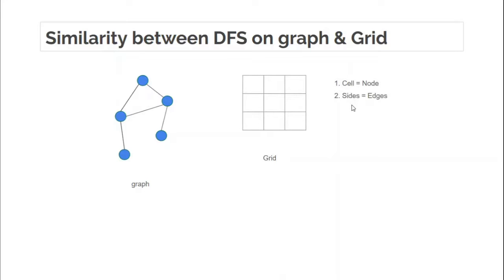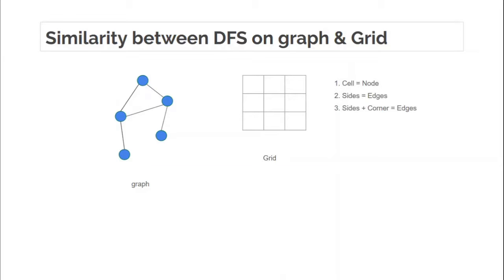There are two different kinds of edges depending upon the problem statement. In some problems, the sides of the cell are considered to be edges, and two cells are said to be connected if they share a common side. In other problems, corners are also considered edges — two cells sharing a corner are also connected. So a cell in a grid is considered to be a node, and edges are either sides or corners.